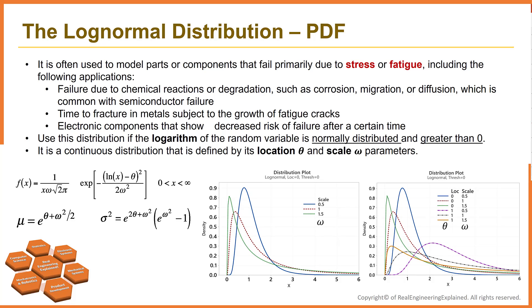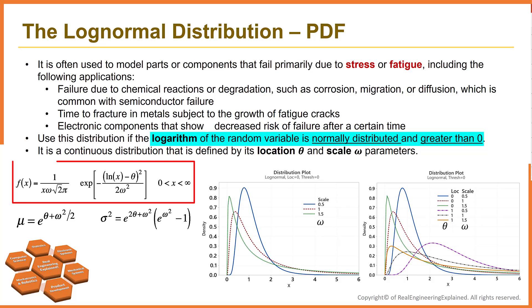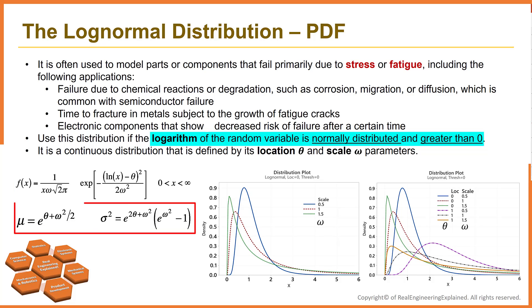Other continuous distributions can also be used in these types of applications. Use this distribution if the logarithm of the random variable is normally distributed and greater than zero. Because the log normal distribution is derived from a simple exponential function of a normal random variable, it's easy to understand and easy to evaluate probabilities. Here is the probability density function, the mean value, and the variance of a log normal random variable X.